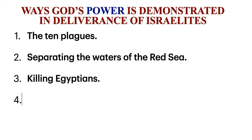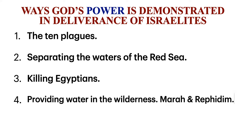Number four, God providing water in the wilderness. From the Red Sea, Moses led the Israelites toward Mount Sinai through the desert, and soon the people were thirsty and hungry. Moses sought God's guidance in order to appease the Israelites. At Mara, the bitter waters were turned sweet after God told Moses to throw a tree into the water. Also at Rephidim, God told Moses to strike a rock with his rod and water flowed from it, thus providing water to the Israelites.